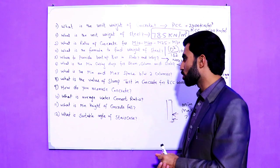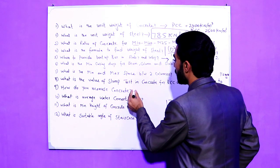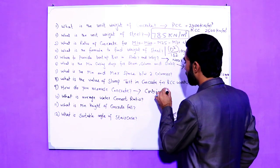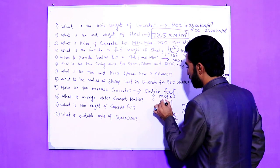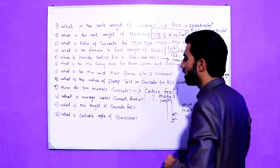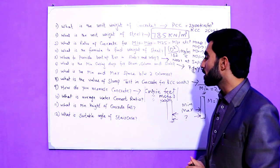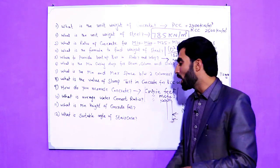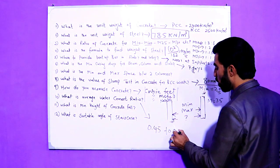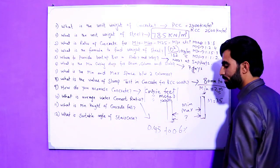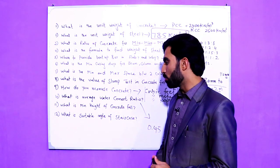The ninth question is: how do you measure concrete? Concrete is measured in cubic feet, cubic meters, or cubic yards. The tenth question is: what is the average water-cement ratio? The answer is 0.45 to 0.60 — this is the average water-cement ratio for concrete.